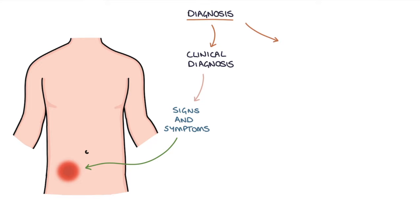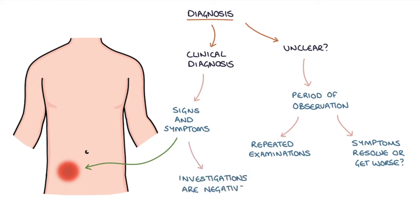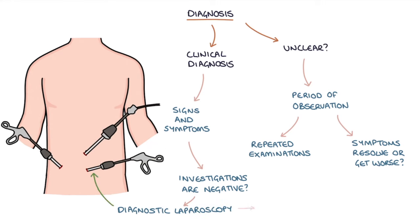Where the diagnosis is unclear, a period of observation can be used with repeated examinations over time to see whether the symptoms resolve or get worse. When a patient has a clinical presentation suggestive of appendicitis but investigations are negative, the next step is to perform a diagnostic laparoscopy to visualise the appendix directly. The surgeon can proceed to appendicectomy during the same procedure if indicated.